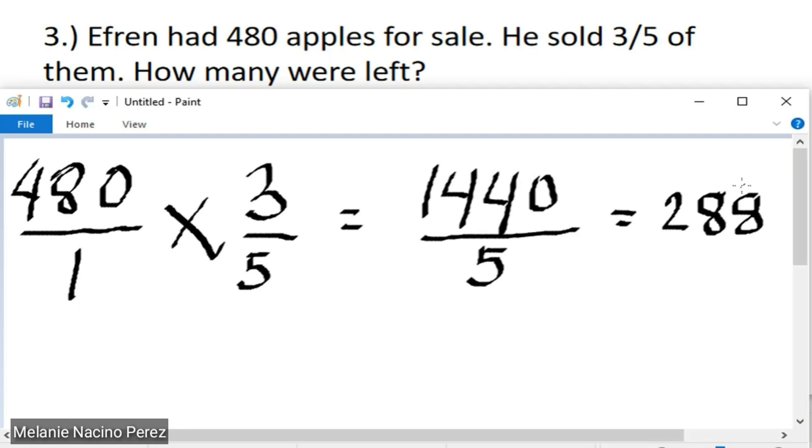So, how many were left? So, 480 apples minus 288 is equivalent to 192. So, 192 apples were left.